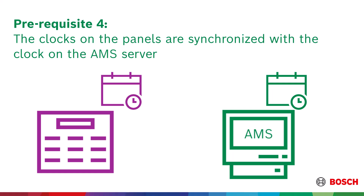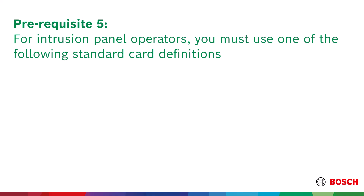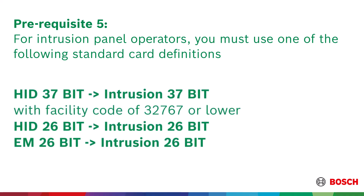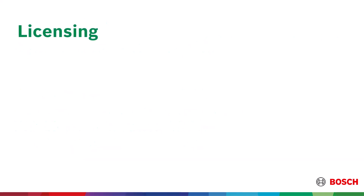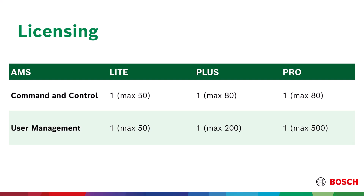Prerequisite 4: The clocks on the panels should be synchronized with the clock on the AMS server. The clocks need to be set to within 100 days, but best practice is to closely synchronize clocks for most reliable operation. Prerequisite 5: For intrusion panel operators, you must use one of the following standard card definitions: HID 37-bit Intrusion 37-bit with a facility/site code of 32,767 or lower, HID 26-bit Intrusion 26-bit, or EM 26-bit Intrusion 26-bit. Licensing: The first panel integration is included with each base license. Additional panels require additional expansion licenses. The maximum number of panels that can be integrated is determined by your license bundle.